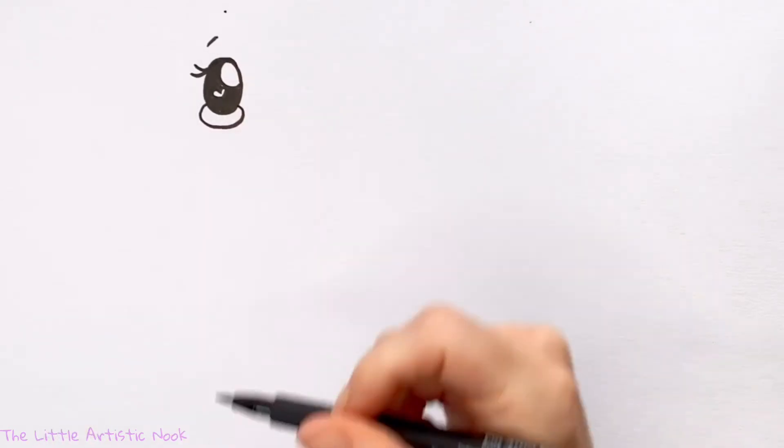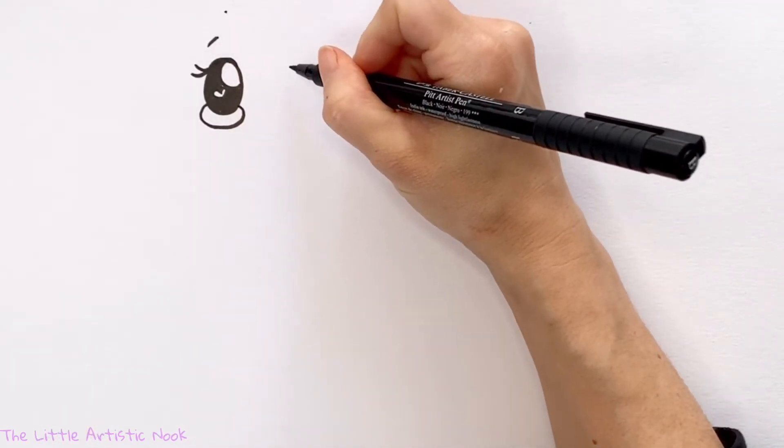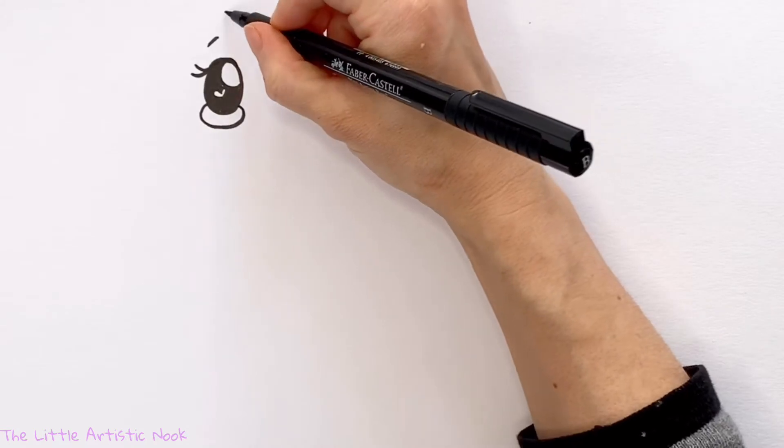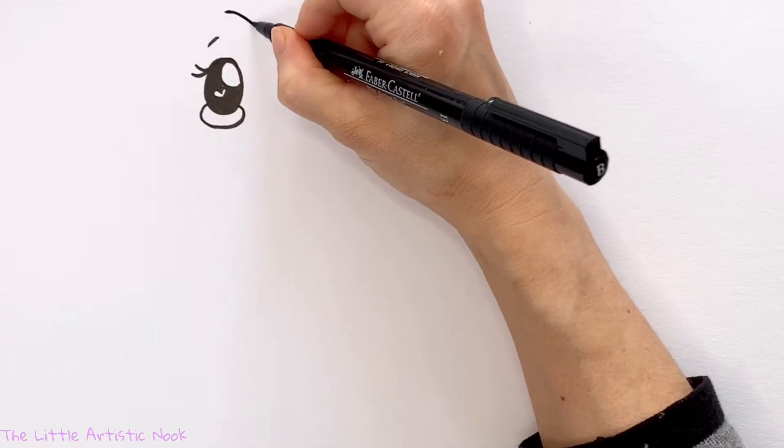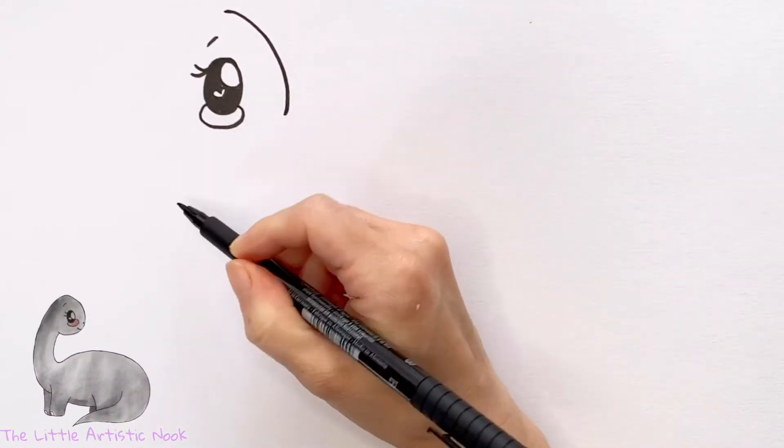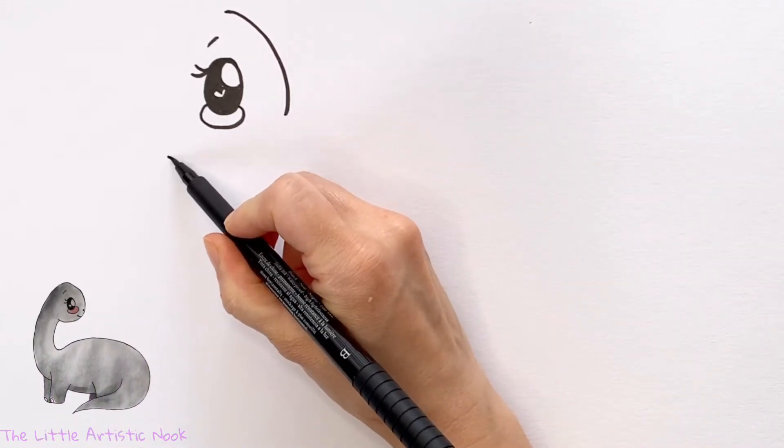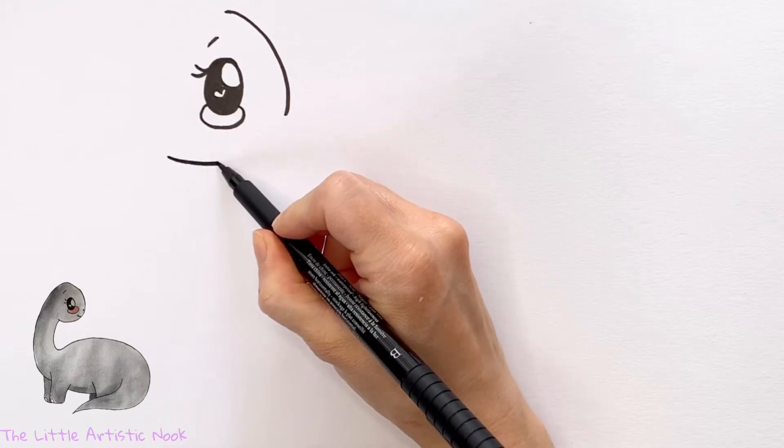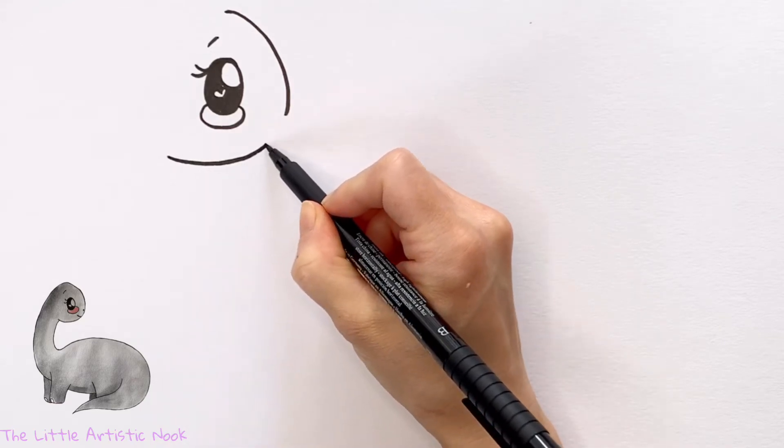Then from there, let's start to curve a line that's moving down and towards the right side of the page, coming out in front of the eye. Stop just about in line with the bottom of the cheek. Then come underneath and start to draw a curved line moving back towards the front of the face.